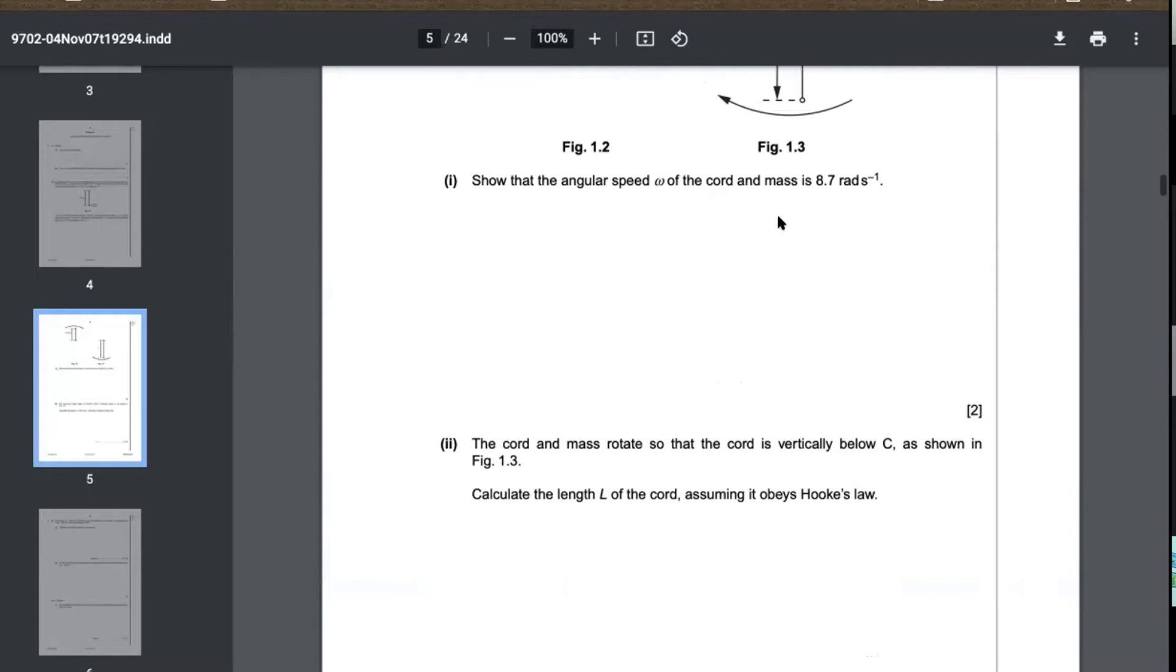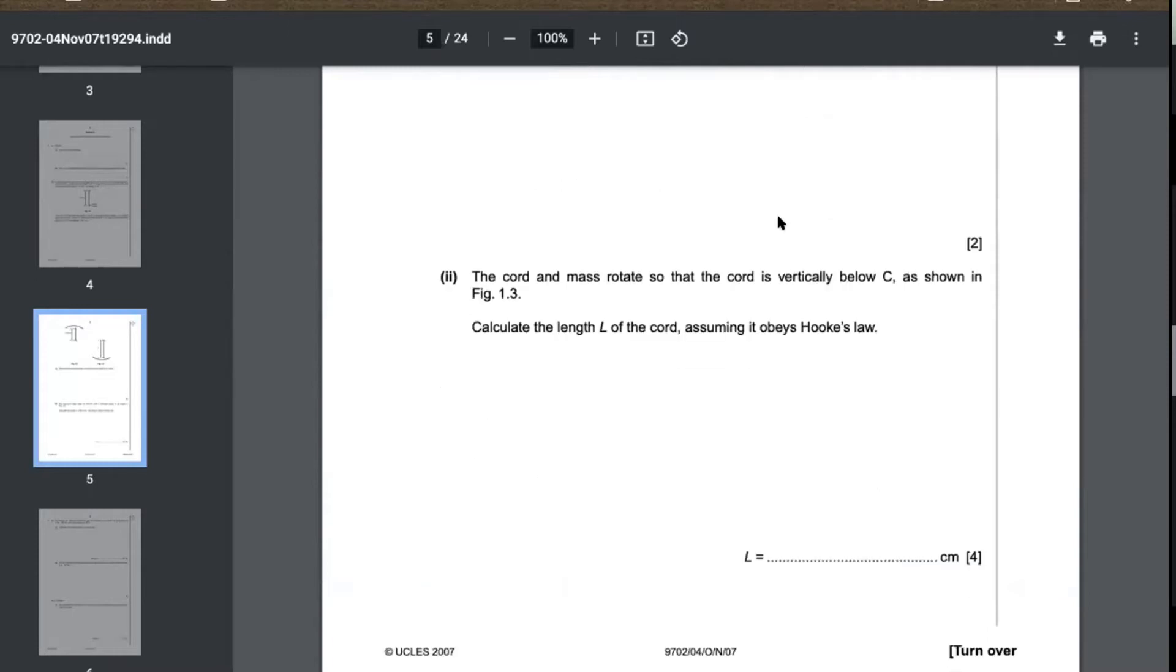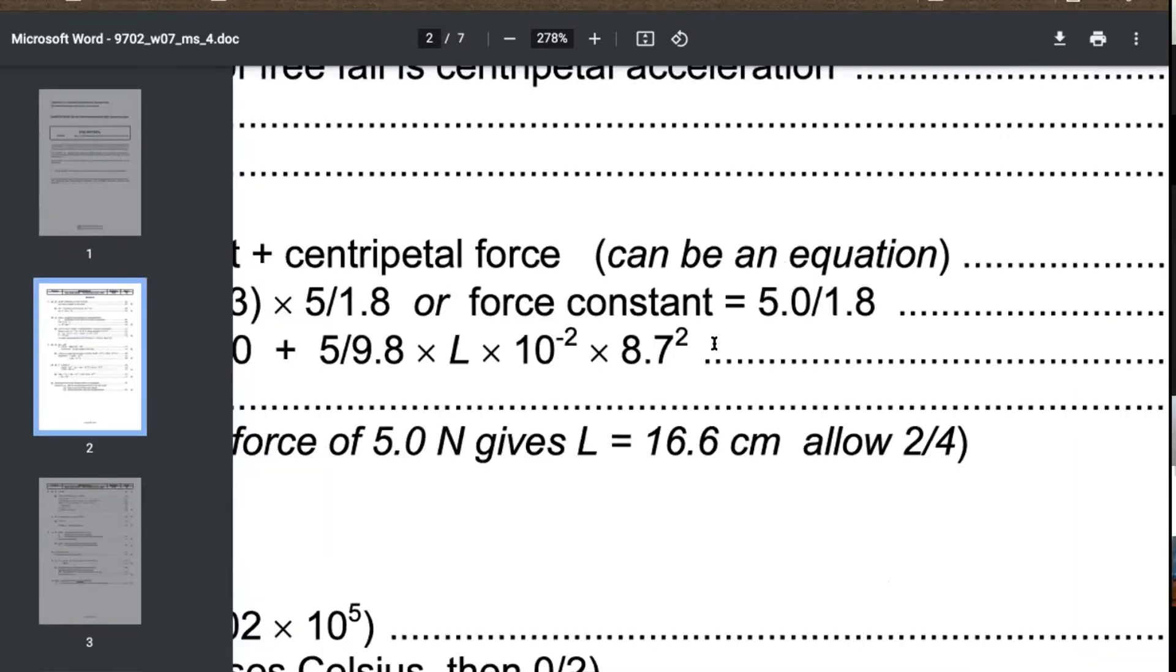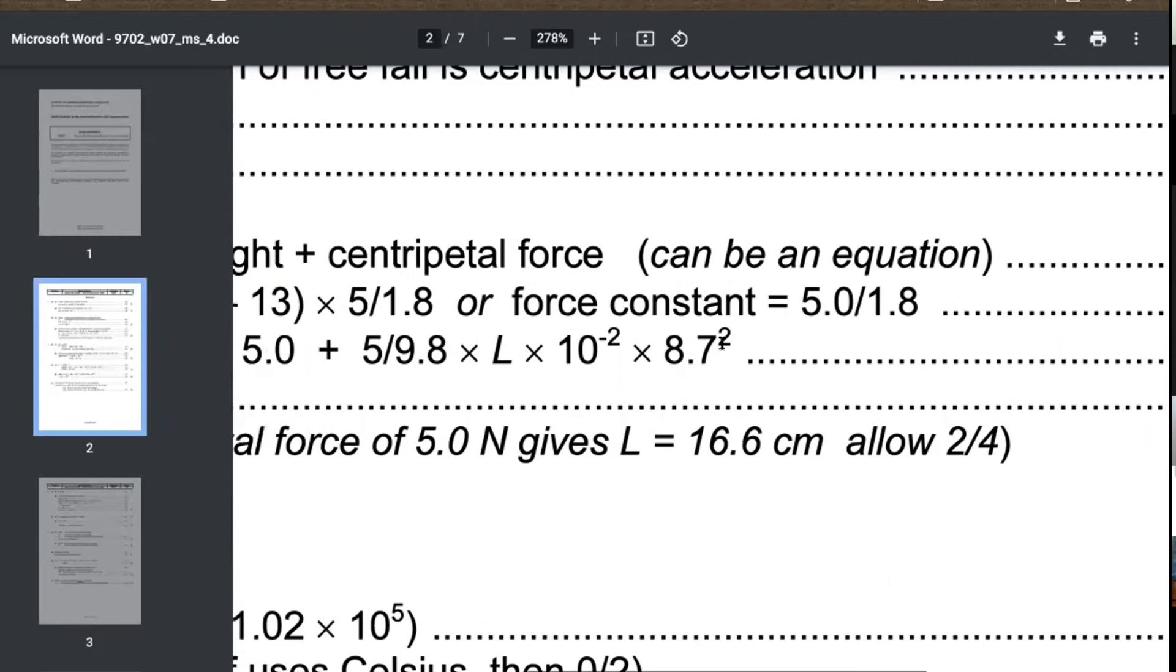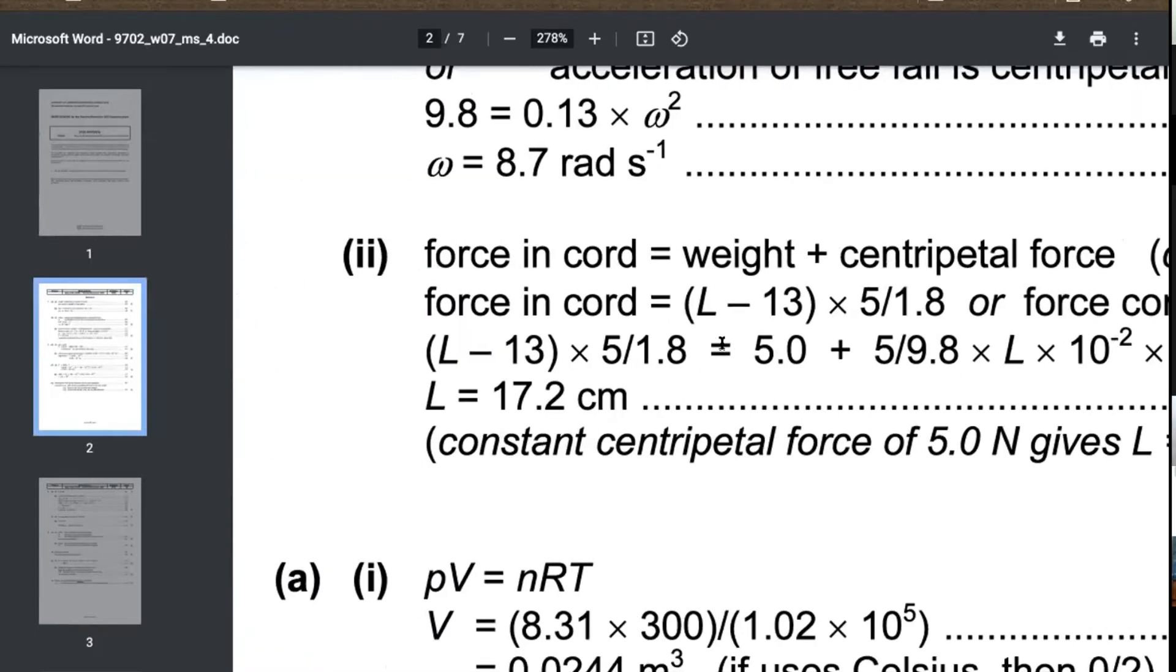F equals kx, so k times (L minus 13) equals the right hand side, which is the weight 5 plus mr omega squared. M is 5 divided by 9.81, r is the radius, and omega squared is 8.7 squared. The answer is 17.2 centimeters. You're correct.